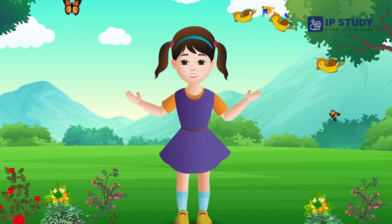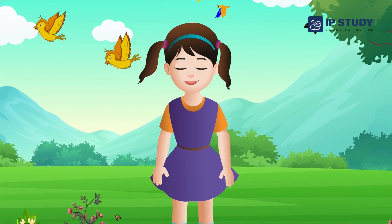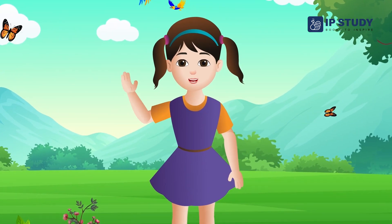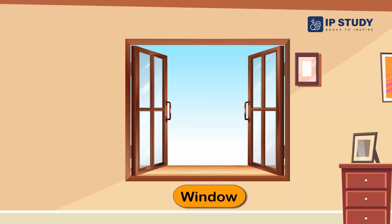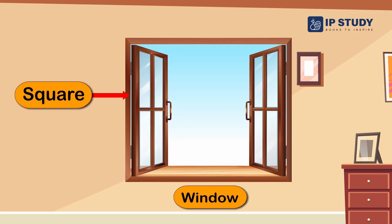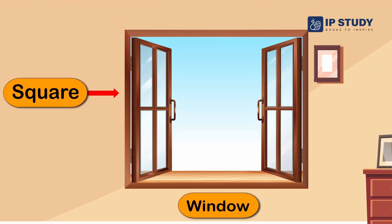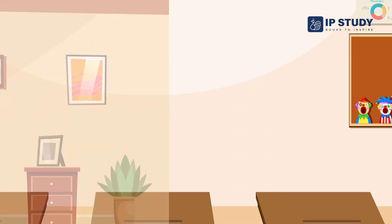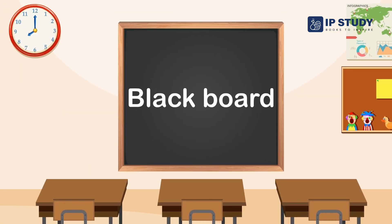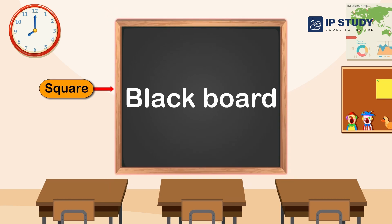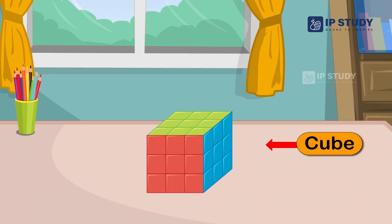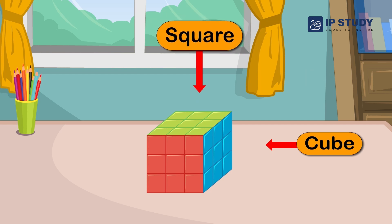Let's look at some examples of things we find around us in square shape. Do you see the window? The shape of the window is a square. Look at the blackboard — the shape of the blackboard is a square. Do you see the cube on the table? The shape of the cube is also a square.